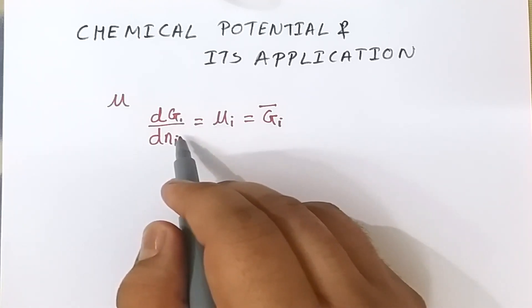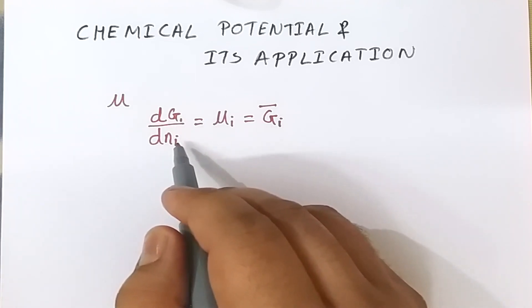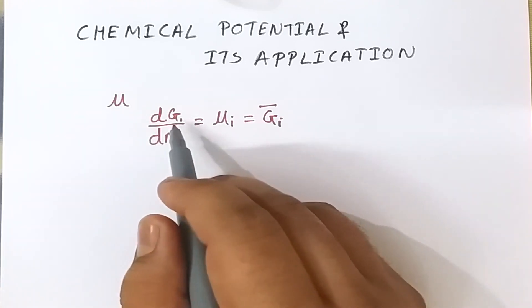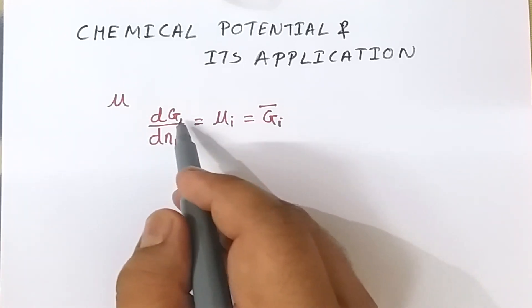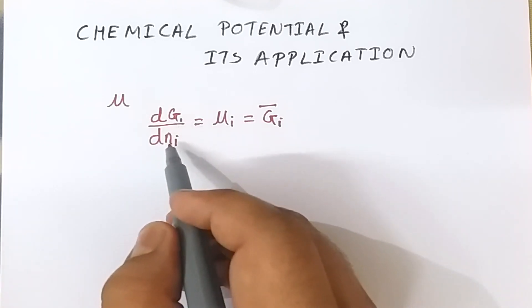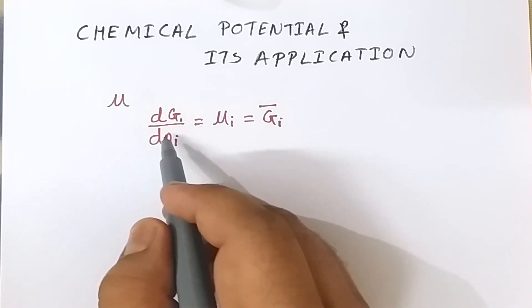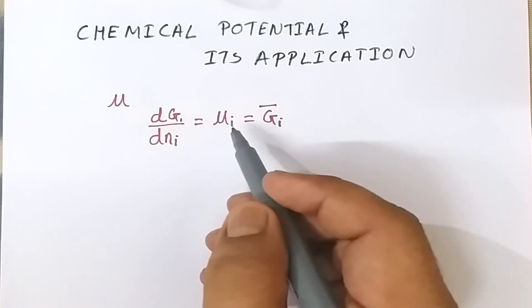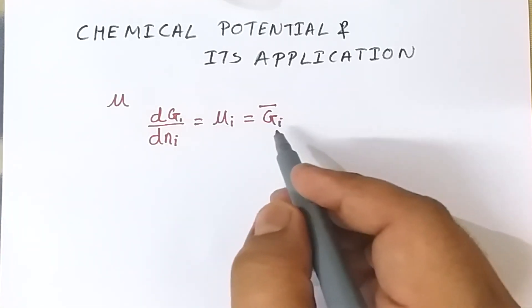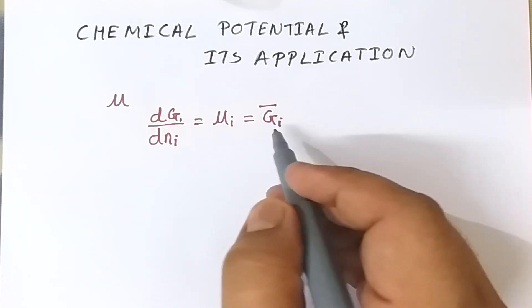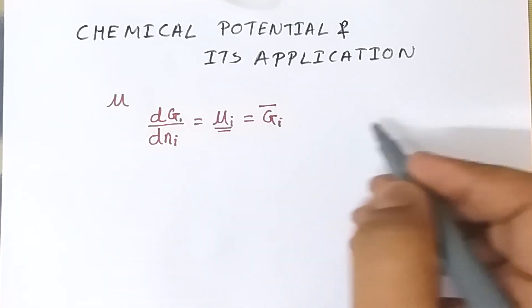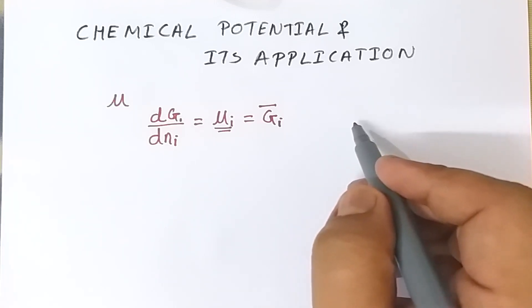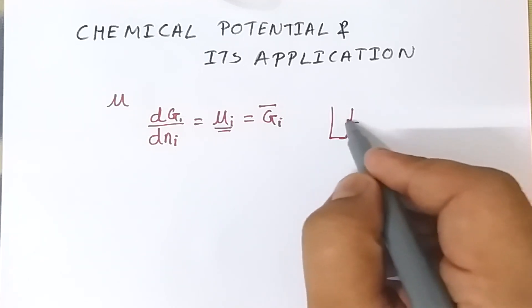Chemical potential is the change in free energy with respect to number of moles. More precisely, it is defined as the change in free energy of any system when we add one mole of a substance at constant temperature and pressure to a large system. This change in free energy is known as the chemical potential.